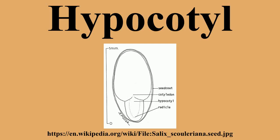The hypocotyl is the stem of a germinating seedling found below the cotyledons and above the radical. In dicots, as the plant embryo grows at germination, it sends out a shoot called a radical that becomes the primary root and penetrates down into the soil.